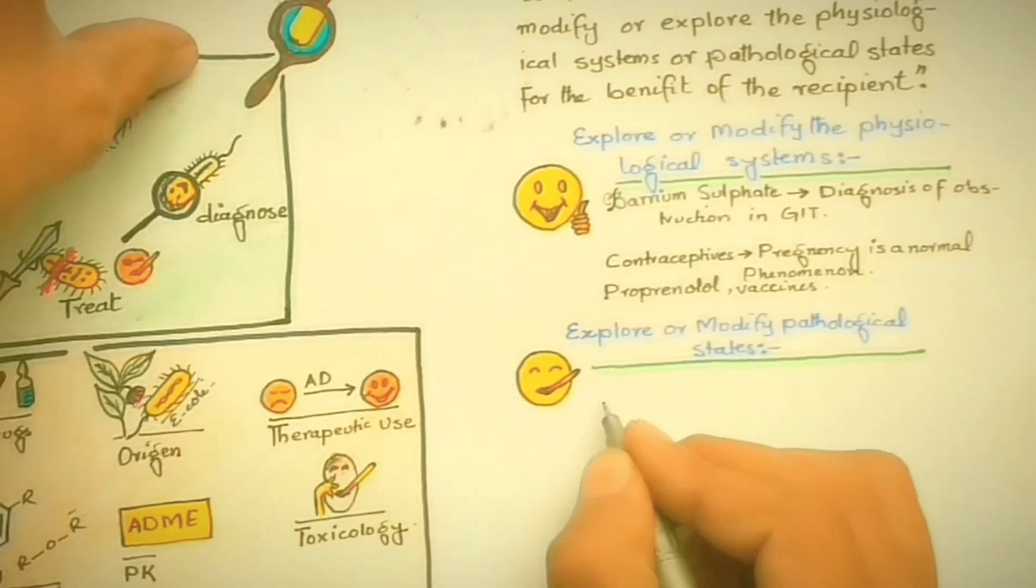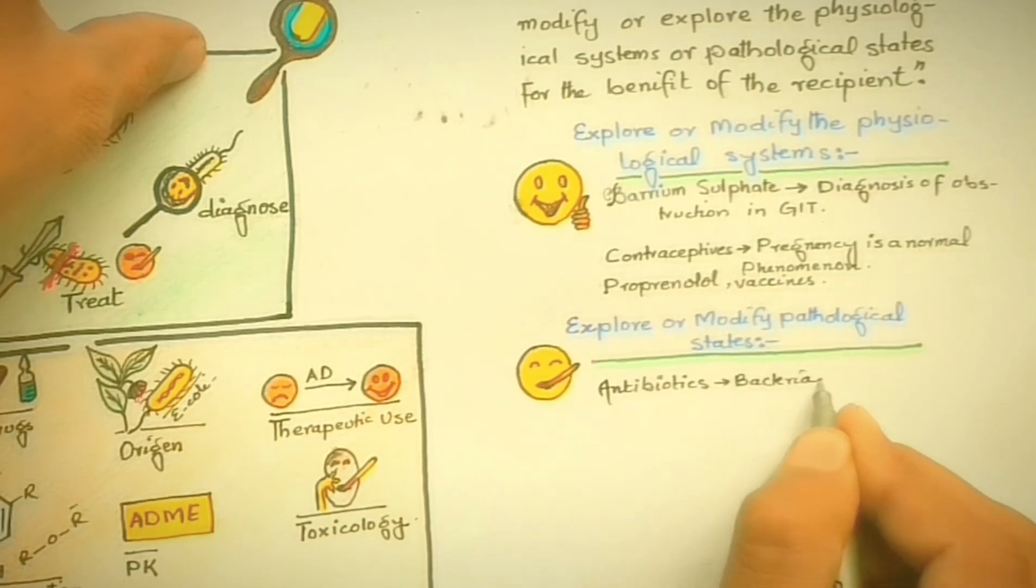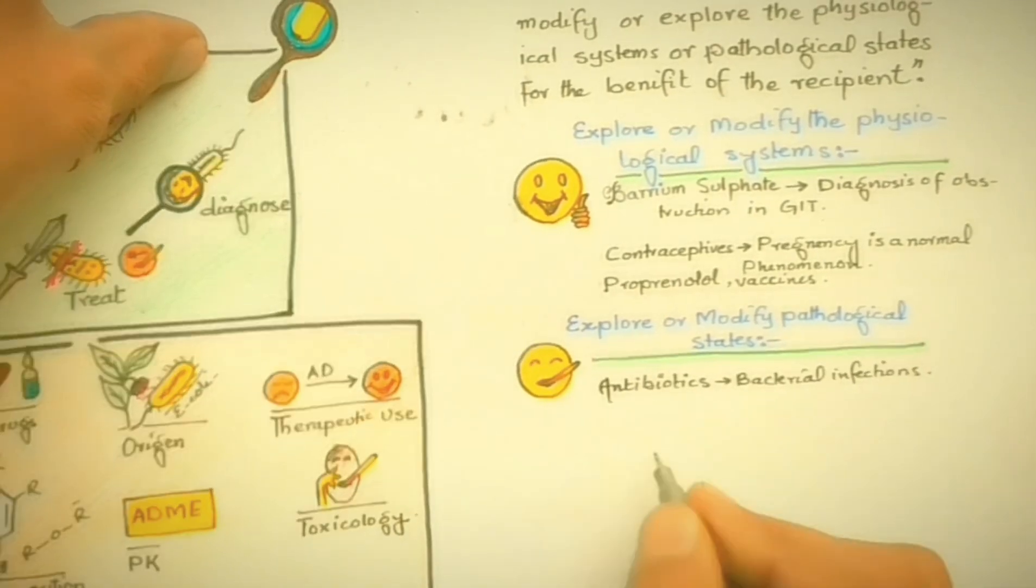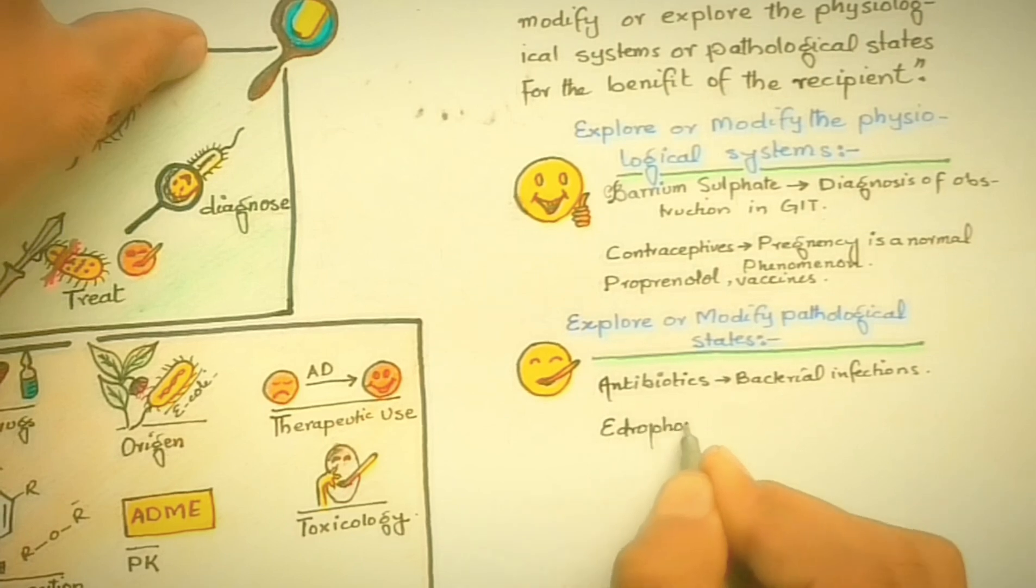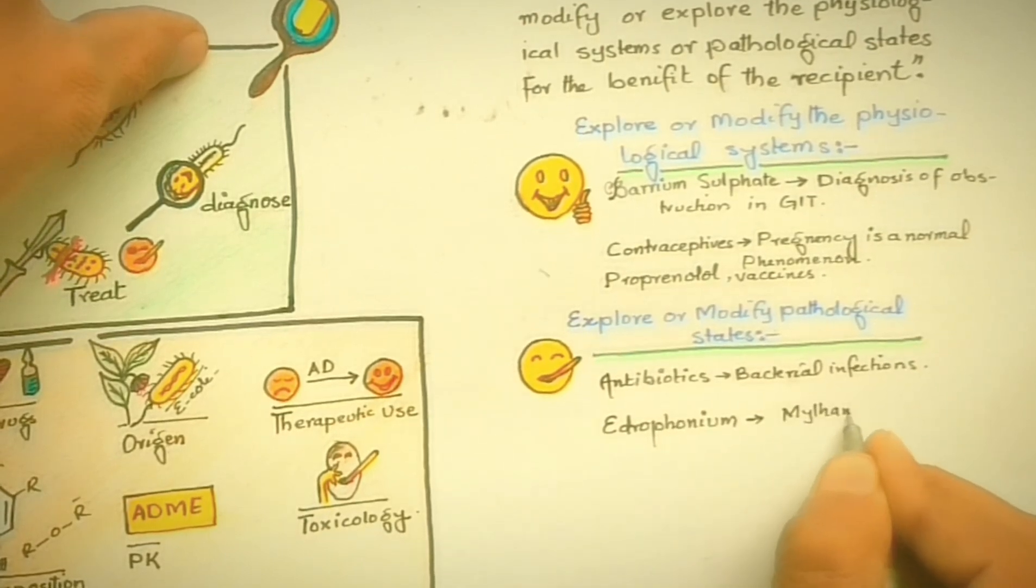For example, antibiotics like penicillins, cephalosporins, macrolides, and tetracyclines are used to treat bacterial infections. Drugs used for diagnostic purposes of pathological states include edrophonium, which is used for diagnosis of myasthenia gravis.